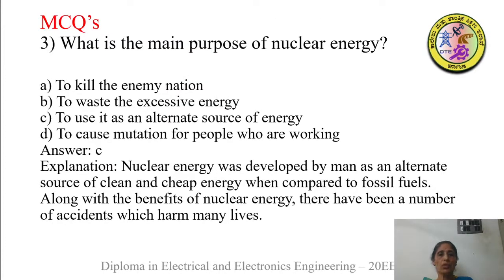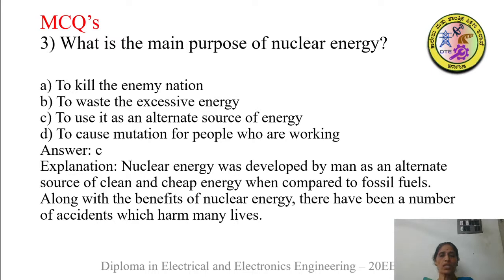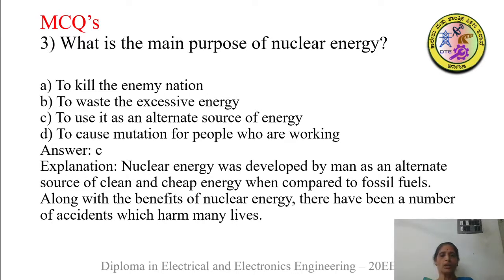Next MCQ: what is the main purpose of nuclear energy — to kill the enemy nation, to waste excessive energy, to use it as an alternative source of energy, or to cause mutation? The best option is C. Nuclear energy was developed by man as an alternative source of clean and cheap energy when compared to fossil fuels. Along with its benefits, there have also been a number of accidents which have harmed many lives.